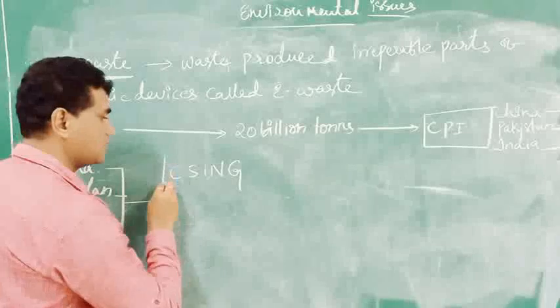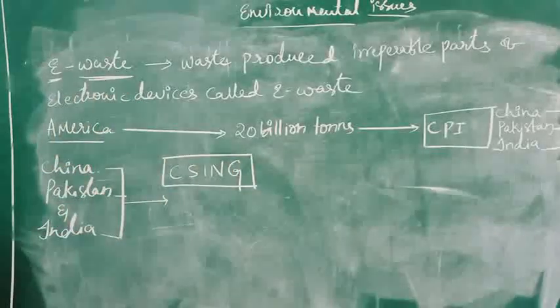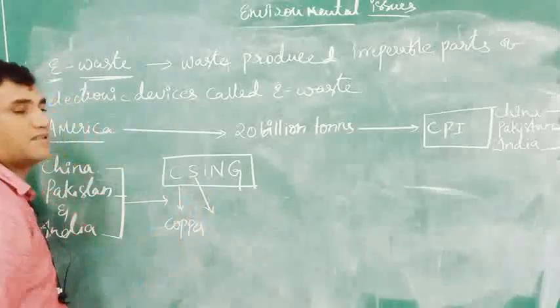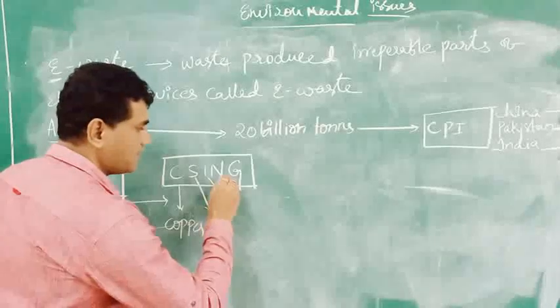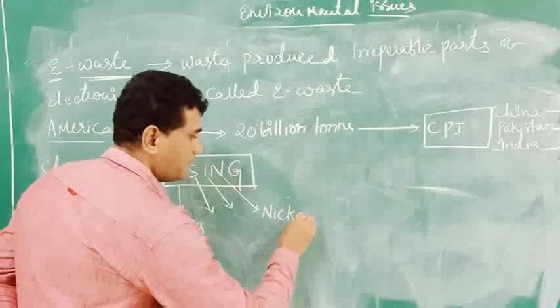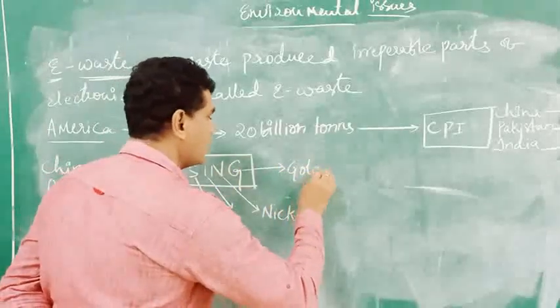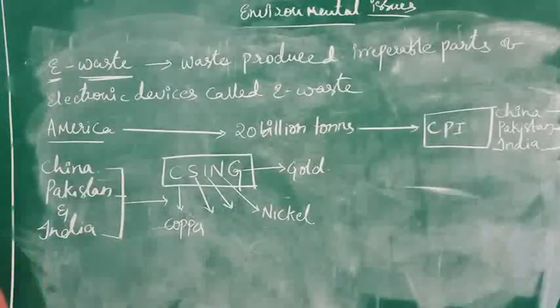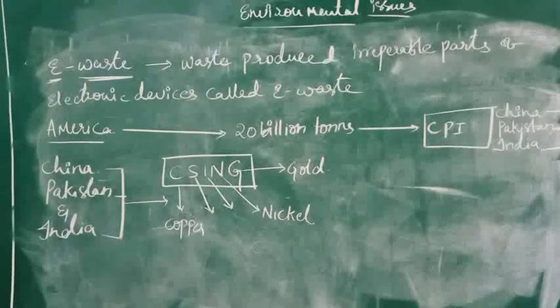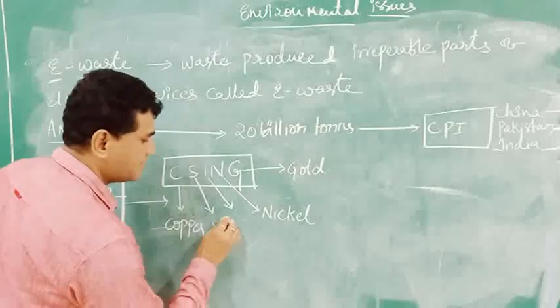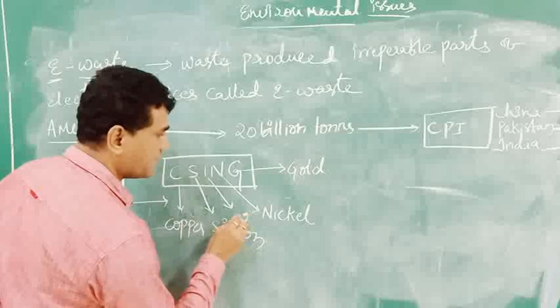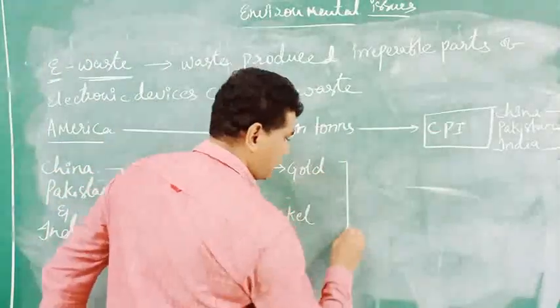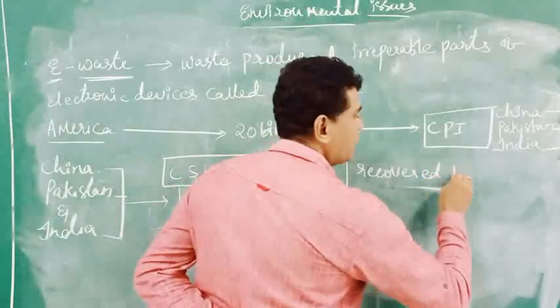Here are these countries, China, Pakistan, and India. They are importing this because we will get 5 important metals from e-waste: CSING. C stands for copper, S stands for silicon, I stands for iron, N stands for nickel, and G stands for gold. This will be recovered during recycling.